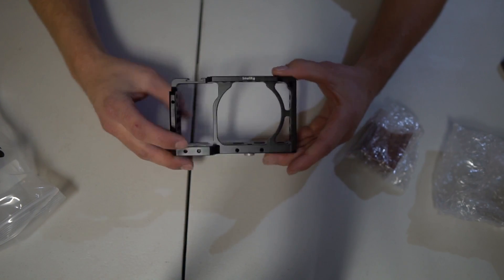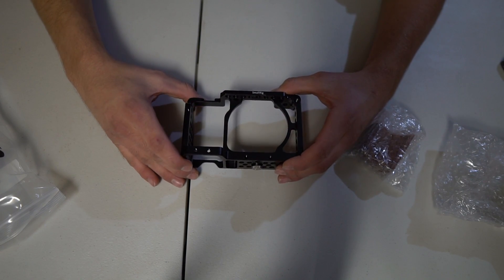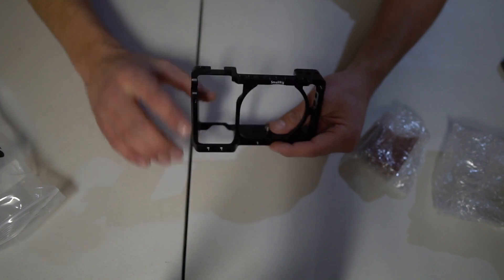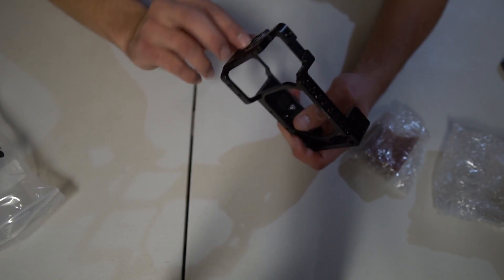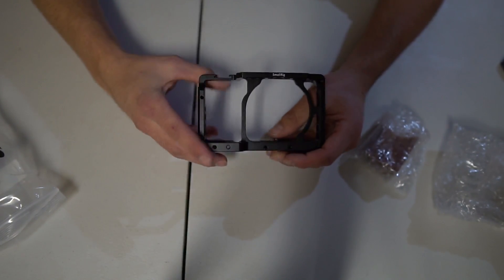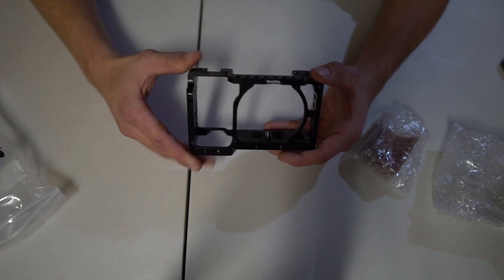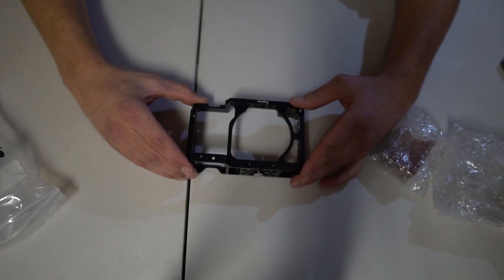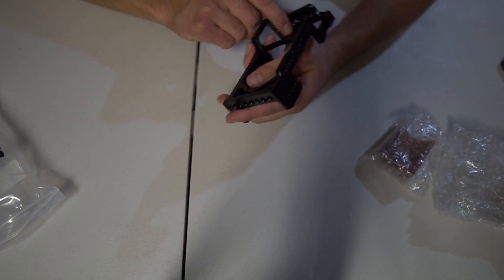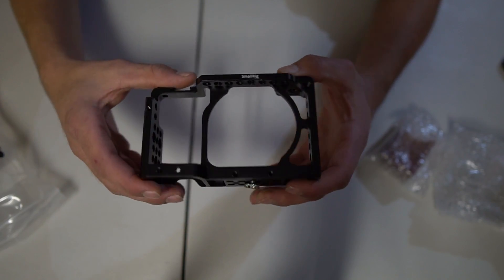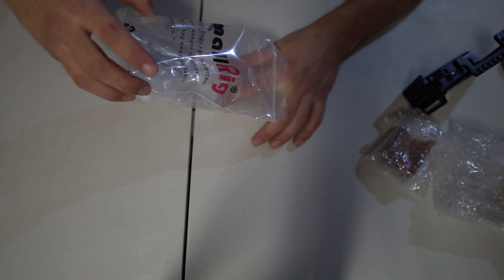So pretty much, this is just like an adapter, almost. It's just multiple different holes where you can thread in microphones, flashes, anything you can really think of. So first impressions, this seems like it's pretty awesome. It's got the SmallRig logo up top here. It seems really durable. I'm excited to get it on my camera.